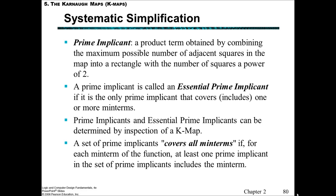The prime implicant is a product term obtained by combining the maximum possible number of adjacent squares in the map into a rectangle — with the number of squares as a power of 2. The essential prime implicant is called essential if it is the only prime implicant that covers one or more minterms. That was illustrated in the previous example where the X·Z term was not an essential prime implicant, so we could remove it. We use the K-map to determine which are the prime implicants and which are the essential prime implicants.